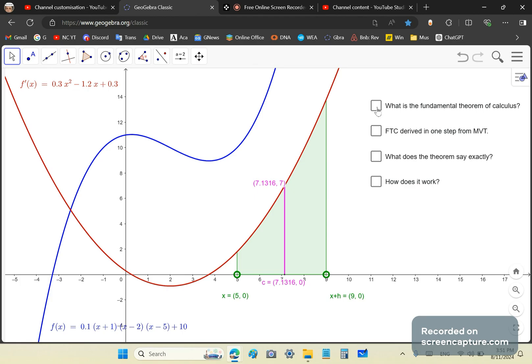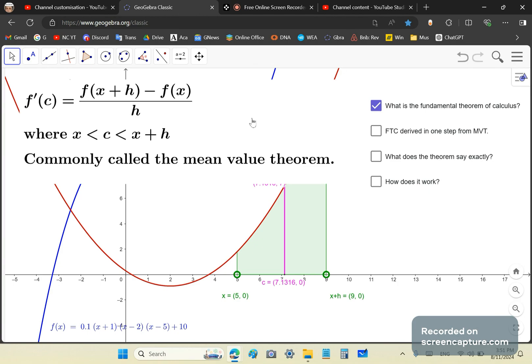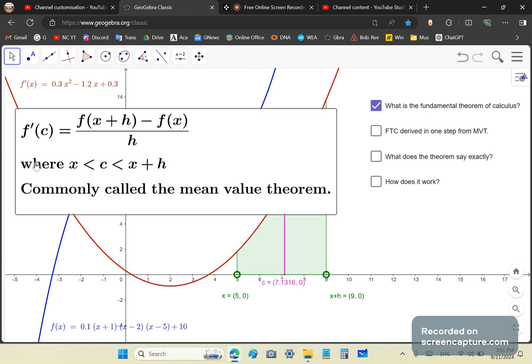What is the fundamental theorem of calculus exactly? Well, the fundamental theorem of calculus is stated by this identity, where c lies between x and x plus h. It is commonly called the identity of the mean value theorem.